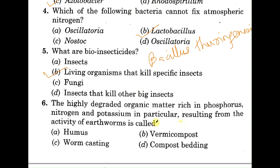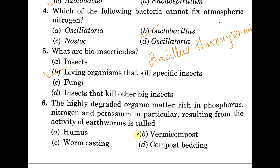Question number six: the highly degraded organic matter rich in phosphorus, nitrogen, and potassium, resulting from the activity of earthworms, is called — A: humus, B: vermicompost, C: worm casting, D: compost. The correct answer is B, vermicompost. 'Vermi' stands for the earthworm. This composting is done using specific earthworms, and the resulting compost is rich in phosphorus, nitrogen, and potassium, which is beneficial for plant growth.